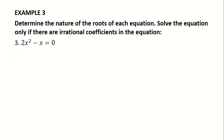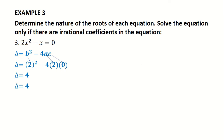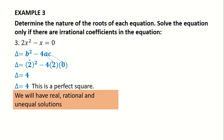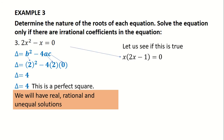For the next example, substituting the values gives delta equal to 4. Since 4 is a perfect square and greater than 0, we will have real, rational, and unequal solutions. Factorizing the equation gives x equals 0 and x equals a half — confirming real, rational, and unequal solutions.